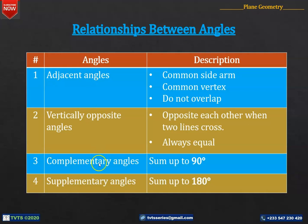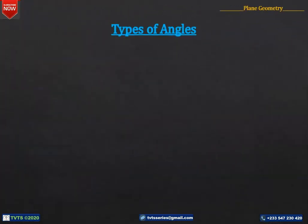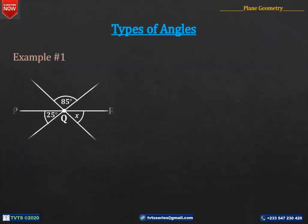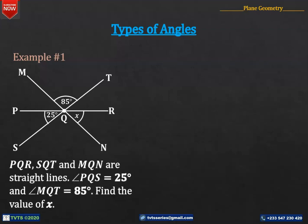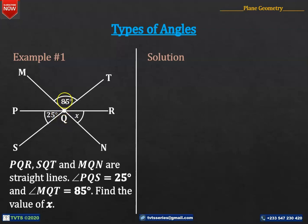Now, with these pieces of information, let's carry out the following calculations. Example number one: PQR, SQT and MQN are straight lines. Angle PQS is equal to 25 degrees and angle MQT is equal to 85 degrees. Find the value of X. Solution: We observe that the straight lines are crossing each other at Q, thereby forming vertically opposite angles.